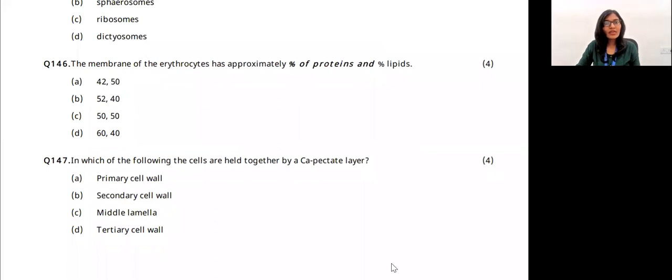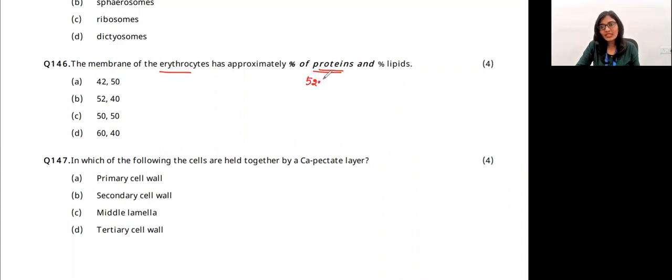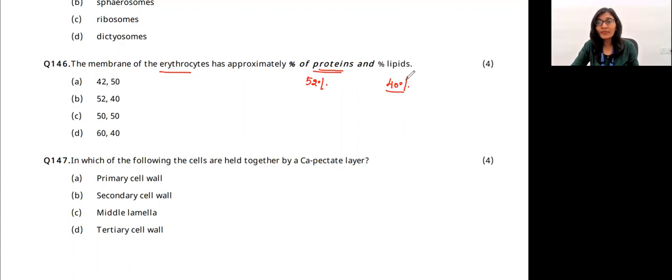Question 50: the membrane of erythrocytes (red blood cells) — a direct question from the NCERT book — is composed of 52% proteins and 40% lipids.